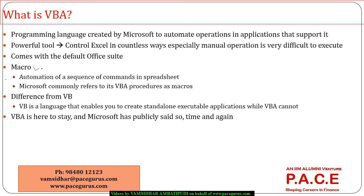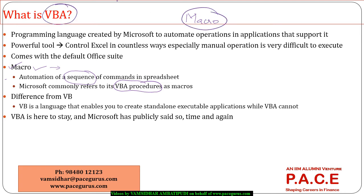Sometimes people use the word 'macros' as well. When it actually started, macro was a name generally used for automation of a sequence of commands — if I am performing 10 steps one after the other, that entire sequence being automated is what we called a macro. But as time progressed, the words macro and VBA started being used interchangeably. So, in the world of Excel, VBA and macro mean one and the same.